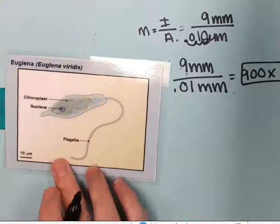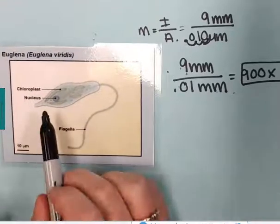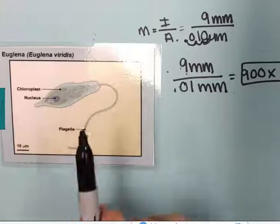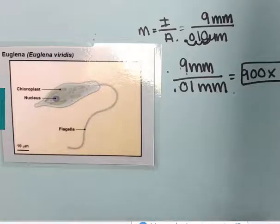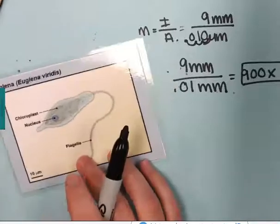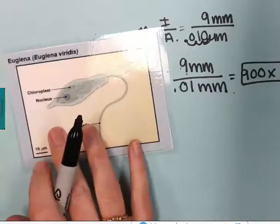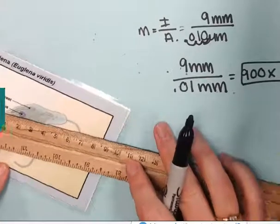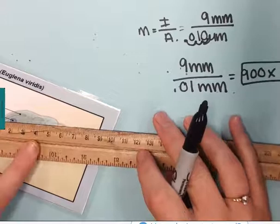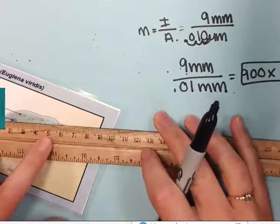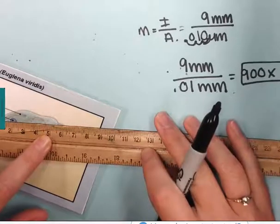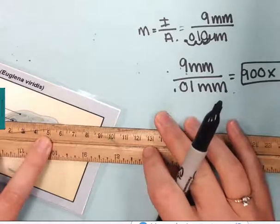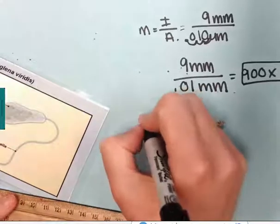That tells me how much magnification I have here, but that's not telling me really how big the euglena is. If I really wanted to know, I can go and do a little bit more calculating. I'm going to use my ruler and I'm gonna measure the length of the euglena.